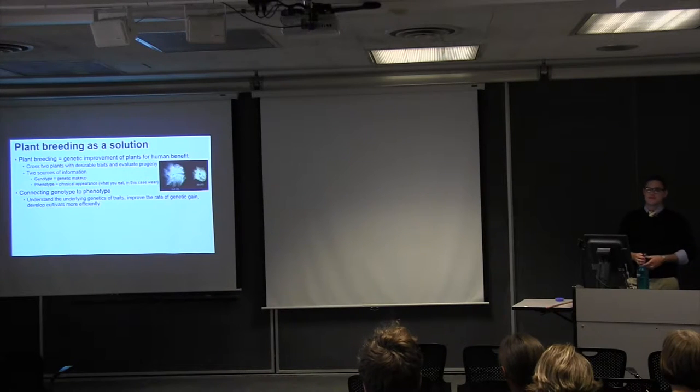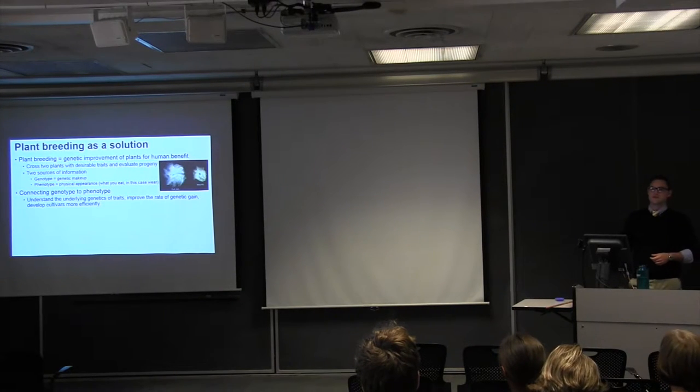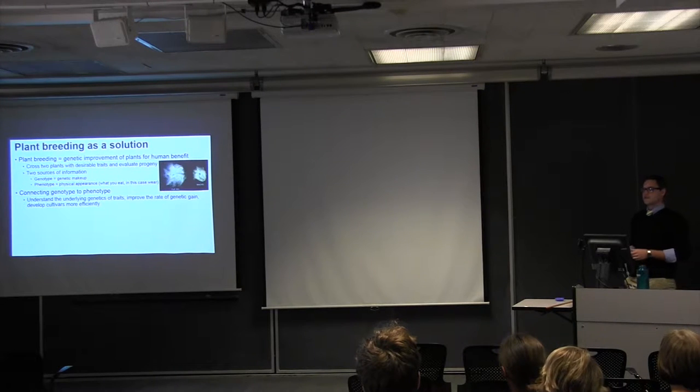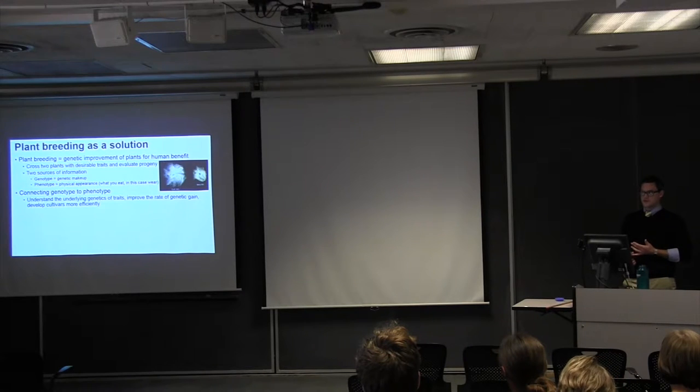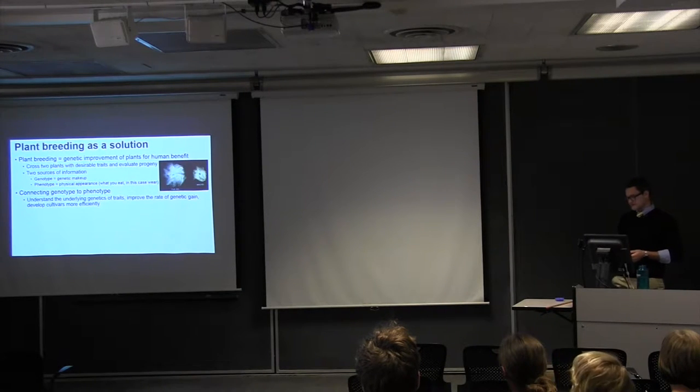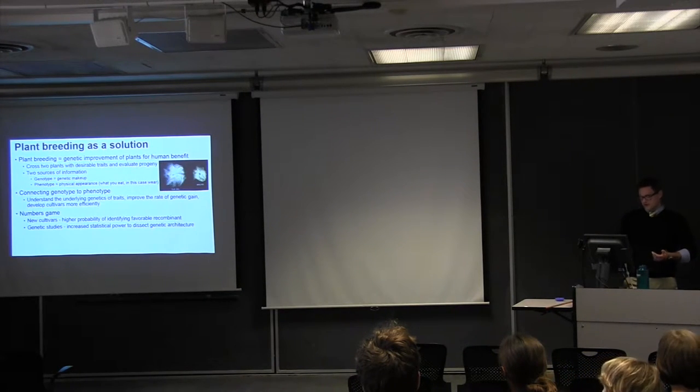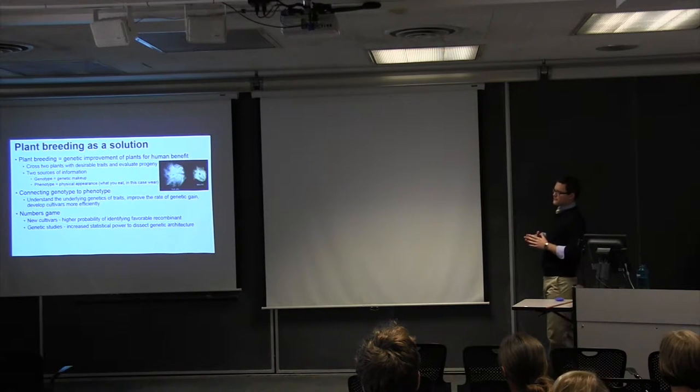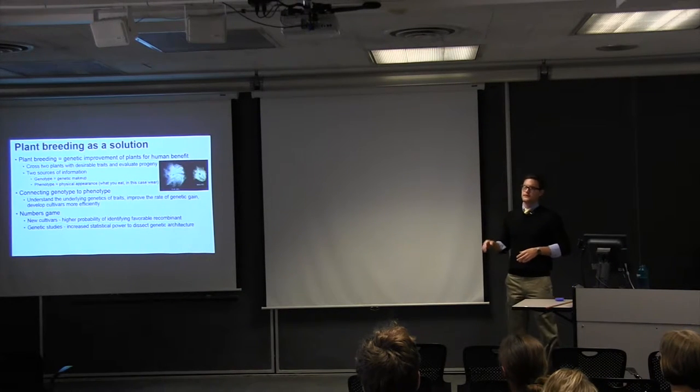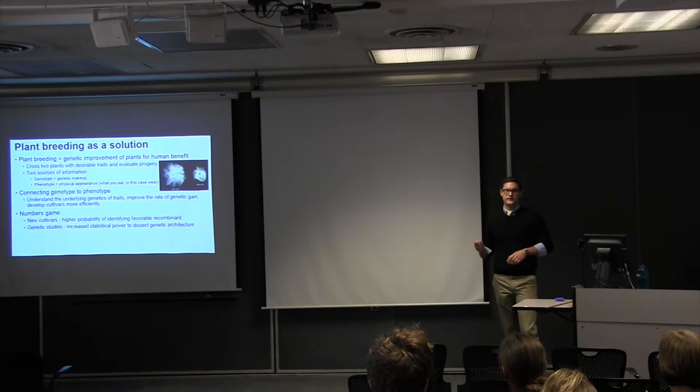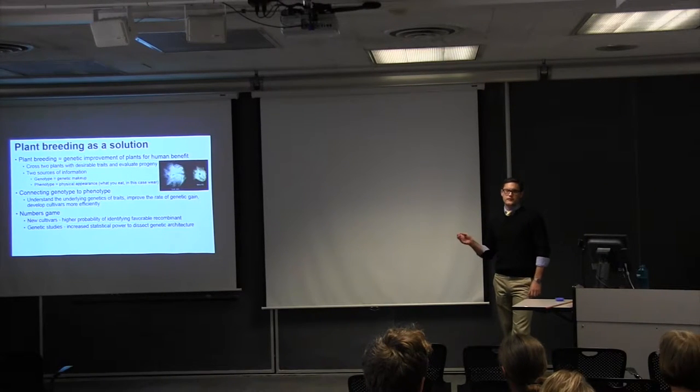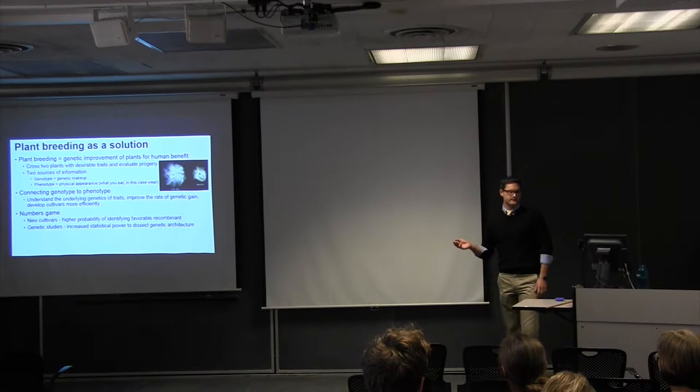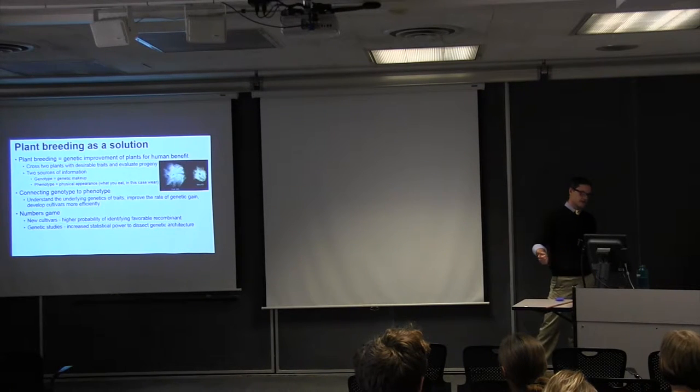Currently, right now, for most crops, it's about a 10-year cycle to go from a cross to releasing a commercial variety. So anything we can do to cut down on that time greatly helps us in terms of meeting climate change as well as production demands. And so kind of another basic of plant breeding is that it's a numbers game in terms of releasing new cultivars. Basically, if you cross these parents, the more progeny that you can screen, the better, the higher success rate you have of identifying that one unique individual that carries the most amount of favorable genes from each parent.